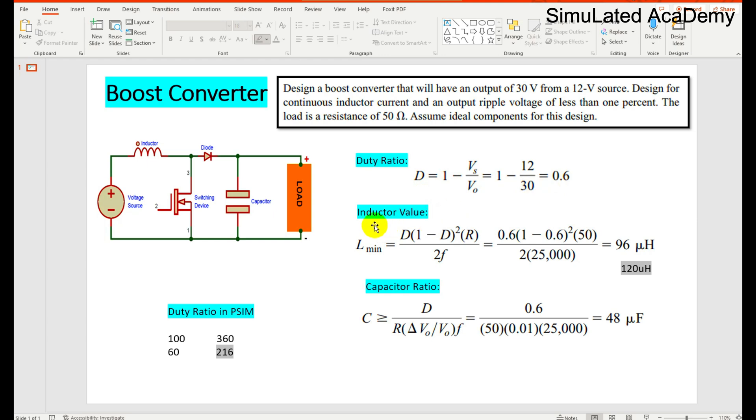The minimum value of inductor can be calculated using the formula L equals D times (1 minus D) squared times R divided by 2F. The frequency is 25 kilohertz, and putting the parameters in this formula, the inductor value turns out to be 96 microhenries.